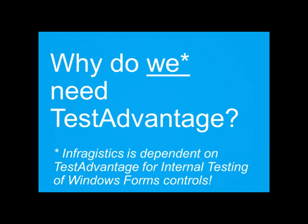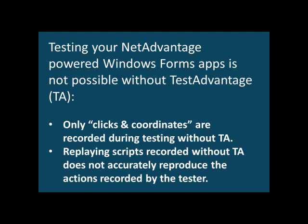A big question is: why do we need Test Advantage? You have Quick Test Pro or Rational Functional Tester set up to record applications and play back recordings running through all user interactions. The biggest answer is that whenever you're trying to record and automate tests that contain third-party controls — in this case Infragistics Net Advantage Windows Forms or WPF controls — it's not possible to get a good recording.